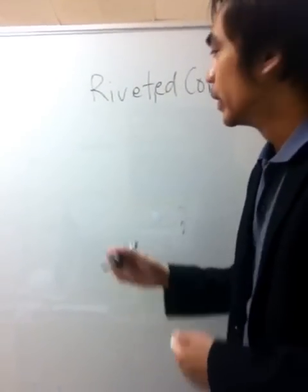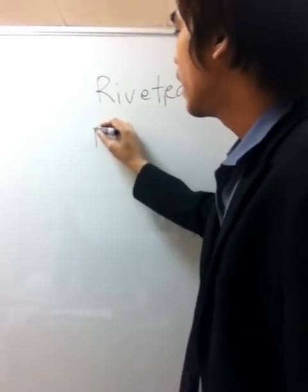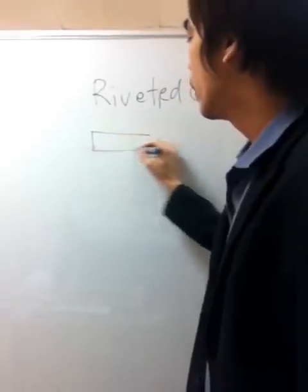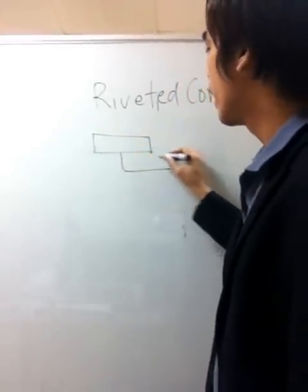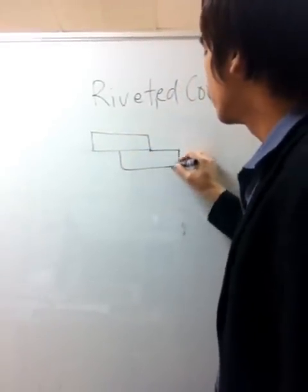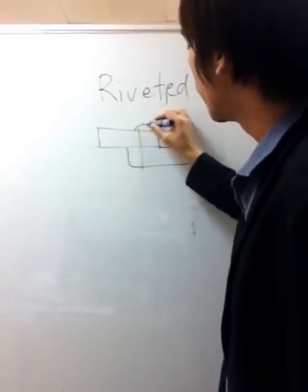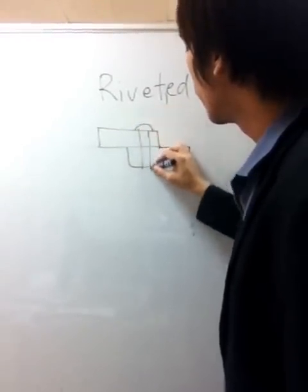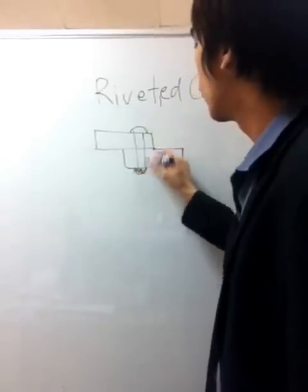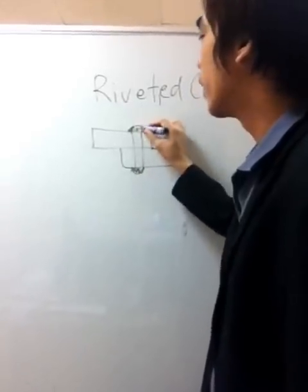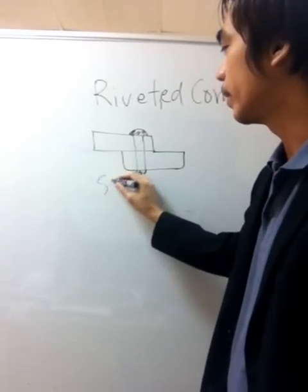The first type of joint is what we call the single-lap joint, in which two materials are being joined by rivets. We call this the single-lap joint.